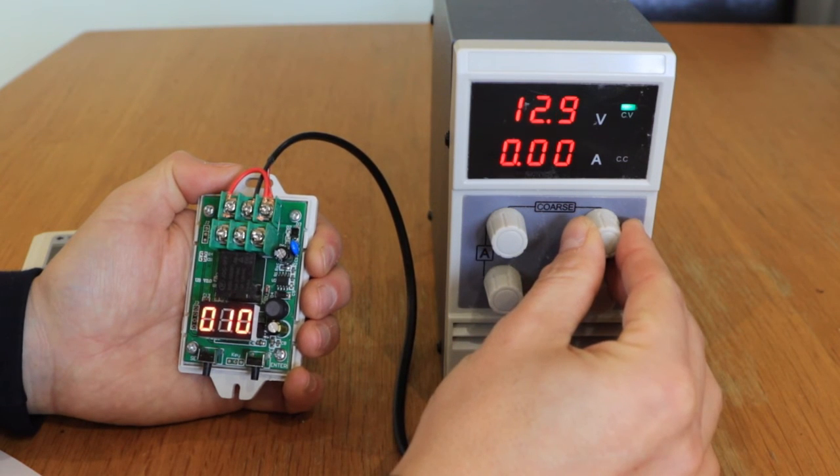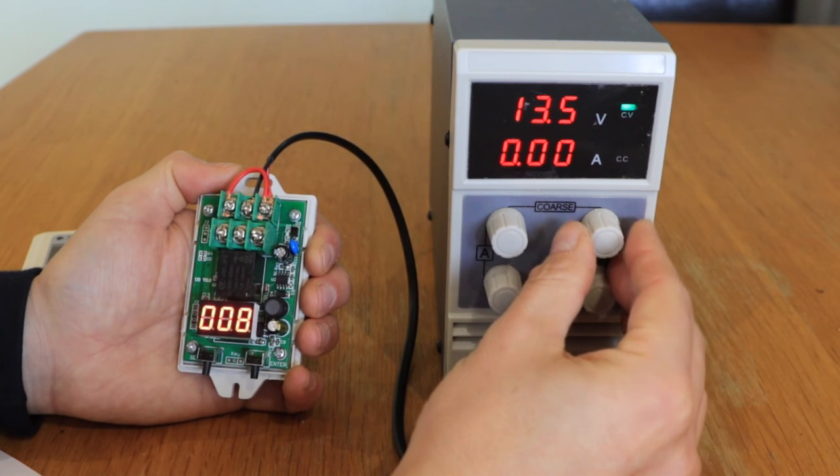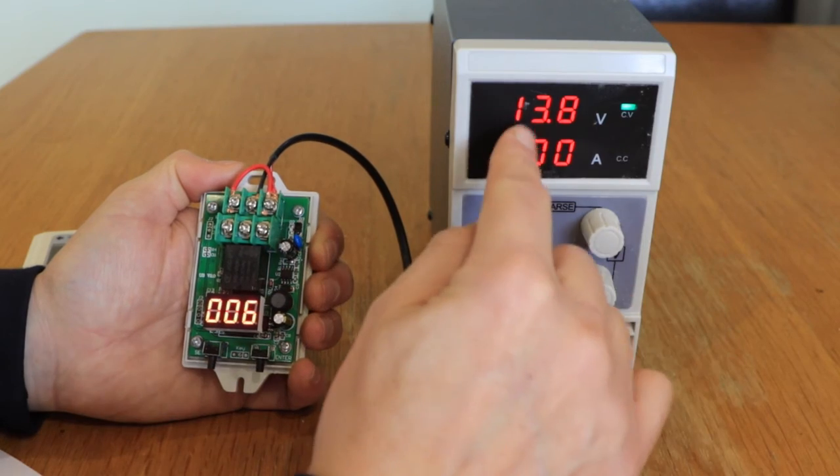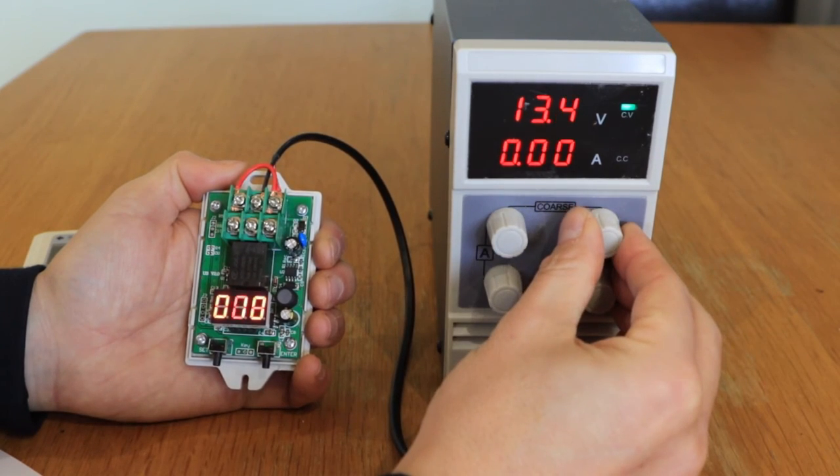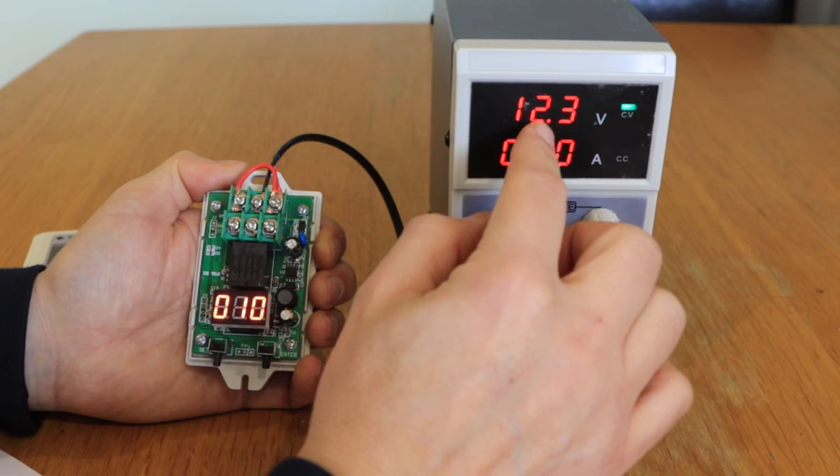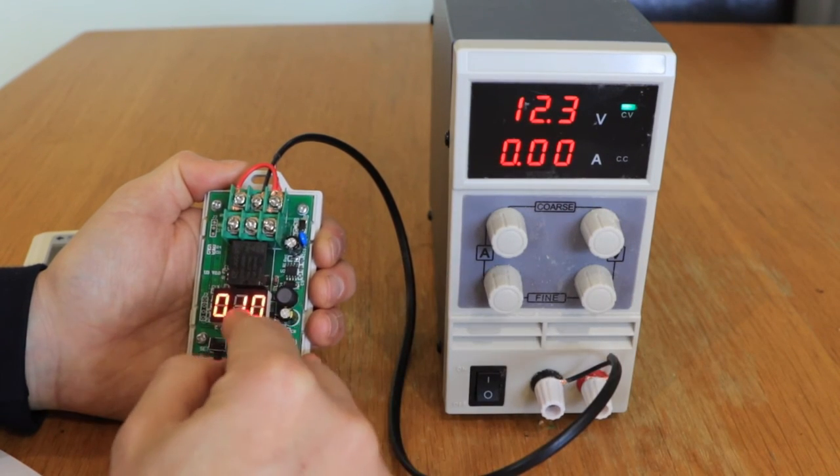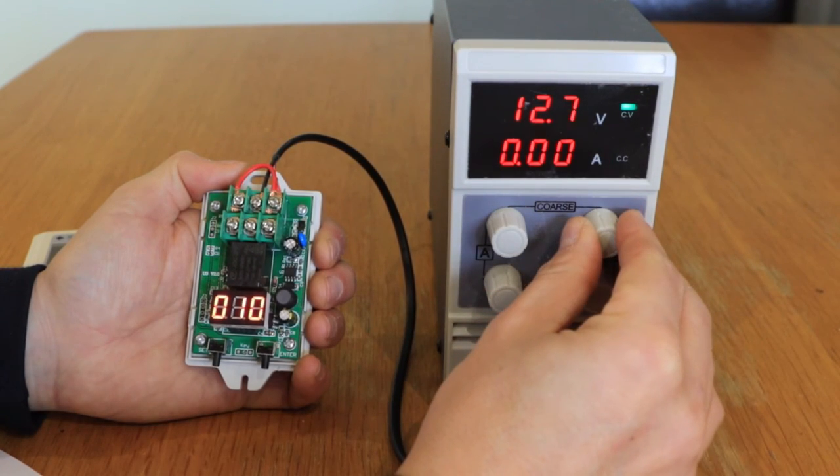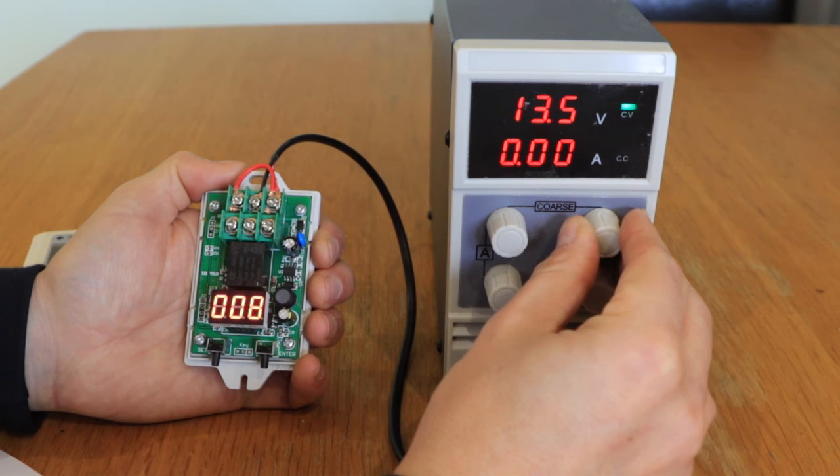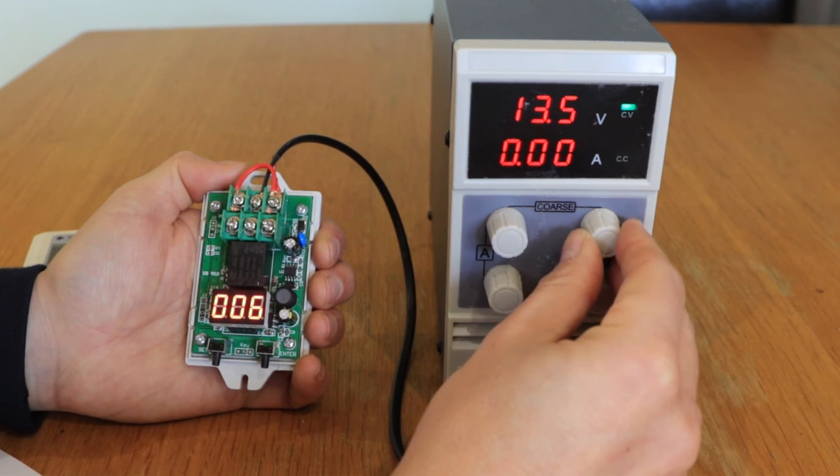So if I turn this back up again, past 13.5 - if it doesn't click by the time it goes back down below the threshold, it won't actually activate. It will just reset the timer. So it has to stay above that voltage for the whole time.